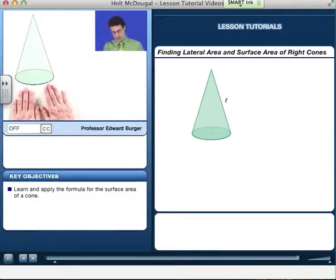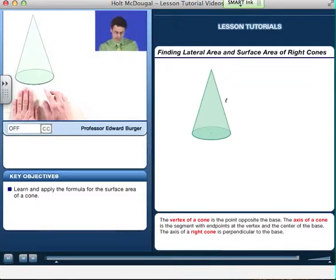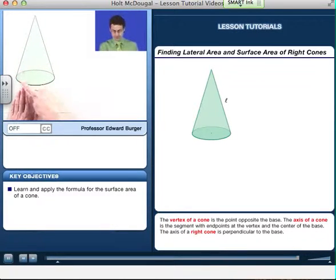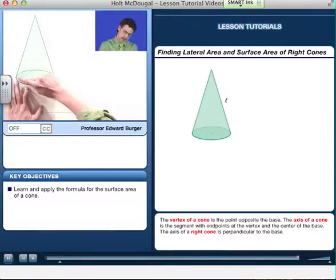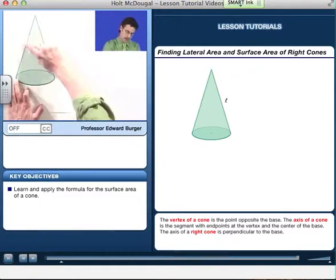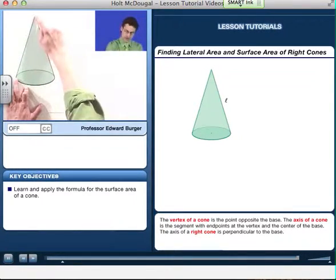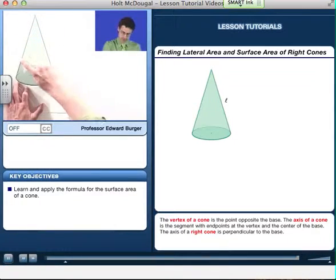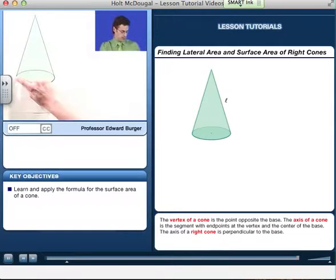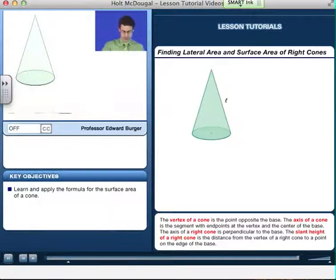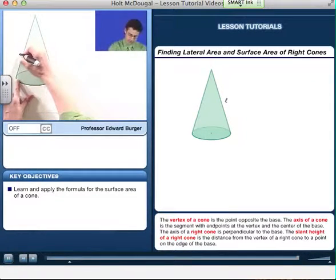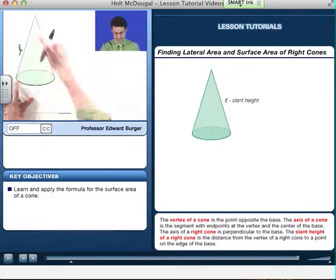So this is an example of a right cone. The base is a perfect circle. And now we define the slant height to be actually the length of a straight line drawn from the very top vertex straight down to any point along the edge of the circle. And so I'll call this L. That's the slant height.